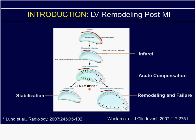If your infarct is less than 24% of LV mass, you're likely to stabilize. Whereas if your infarct is much larger, the additional wall stress imposed upon the rest of the heart, particularly the LV chamber, is predisposing you to LV remodeling and ultimately failure. It's this balance that we're looking at in the study, with the hypothesis that we can remove that balance point with gene therapy.